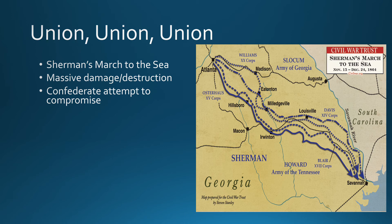By about February 1865, the Confederate vice president Alexander Stephens meets with Lincoln, suggesting they can reach a peace and compromise to end the war. Lincoln says no. By early 1865, the Confederacy has nothing to offer and no real threat to make. Lincoln is set on ensuring the only way this war ends is through unconditional surrender.